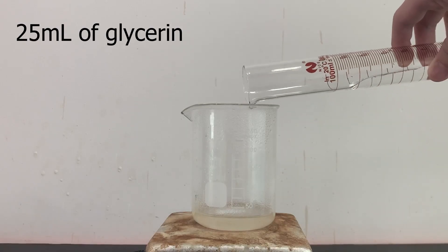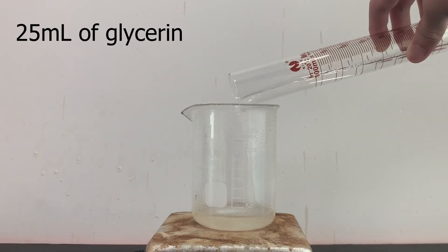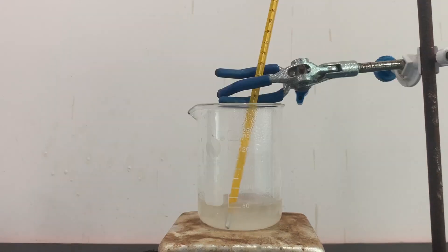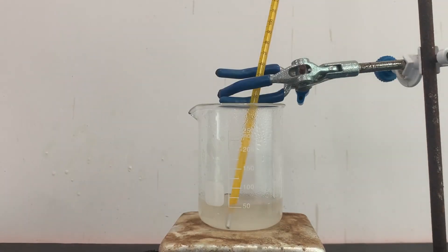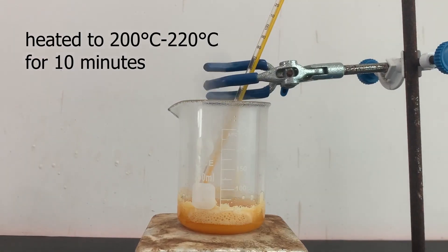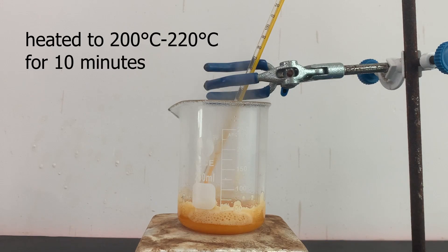When everything dissolves, 25 milliliters of glycerin is added. I then heated the reaction mixture to boil off the water. I continued heating the reaction mixture to 200 degrees Celsius, but I made sure that it doesn't go above 220 degrees Celsius.